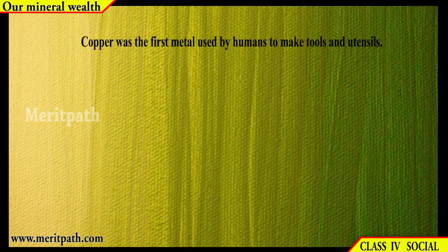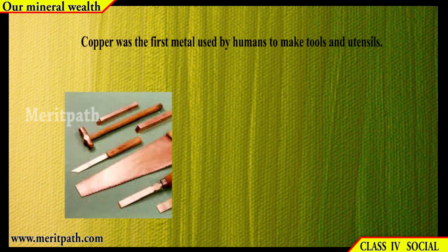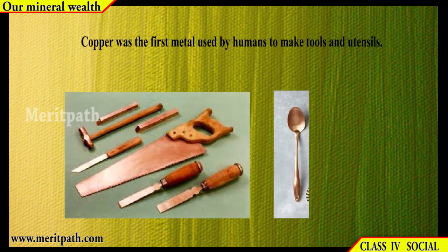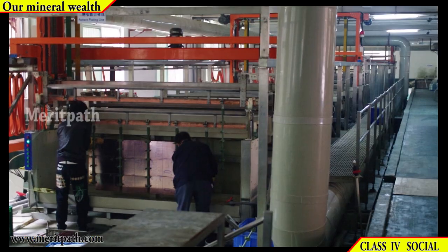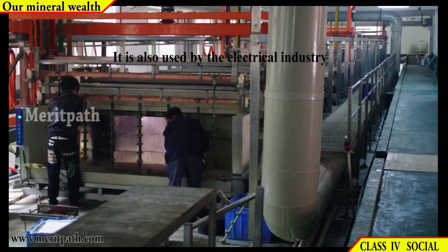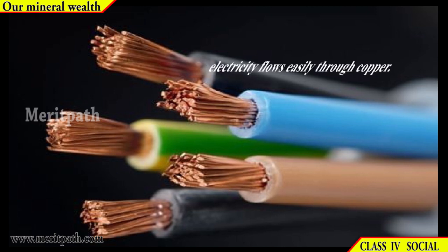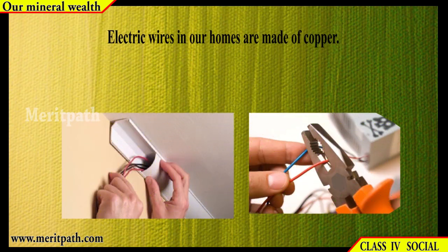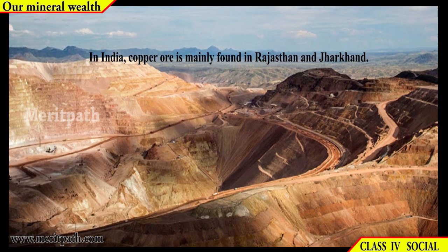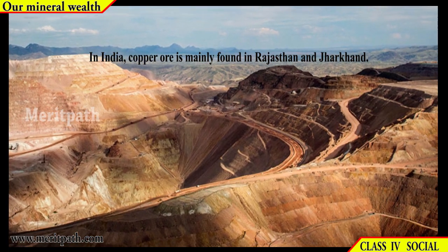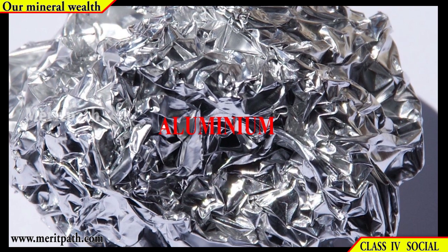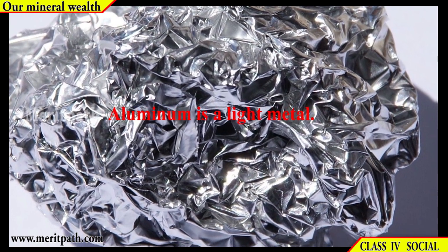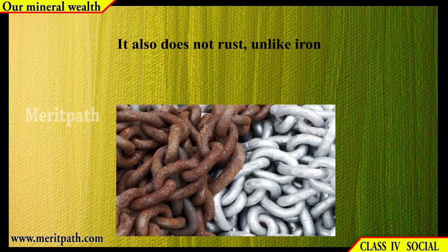Copper is the first metal used by humans to make tools and utensils. It is also used by the electrical industry, as electricity flows easily through copper. Electric wires in our homes are made of copper. In India, copper ore is mainly found in Rajasthan and Jharkhand.